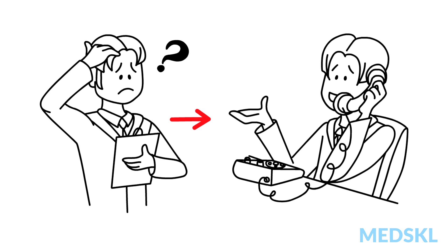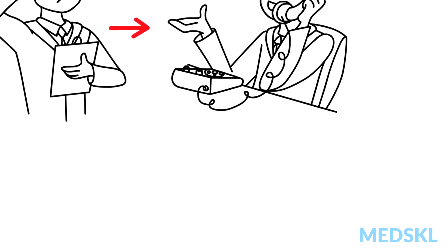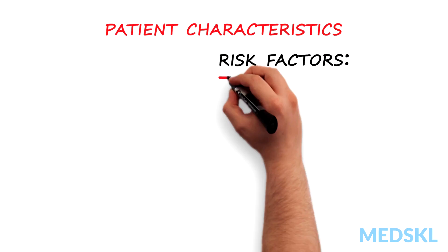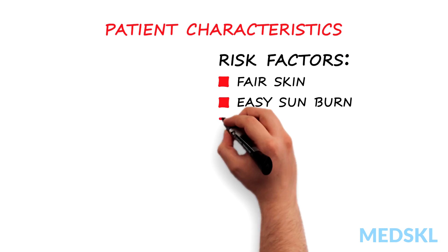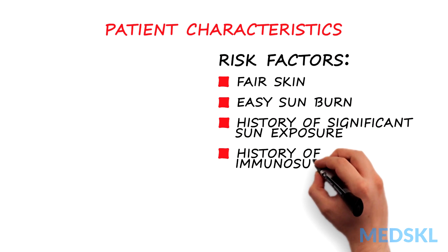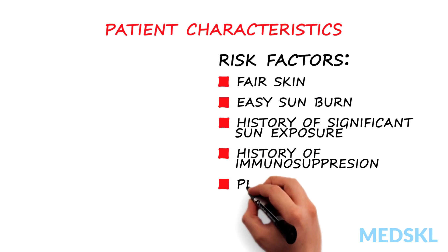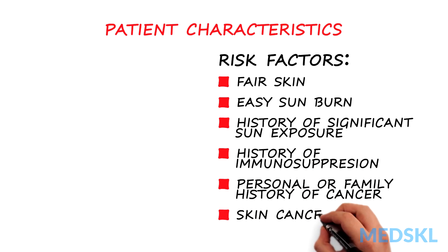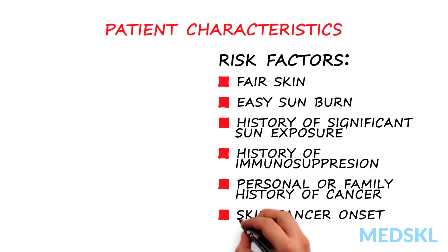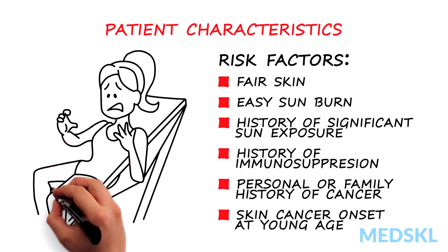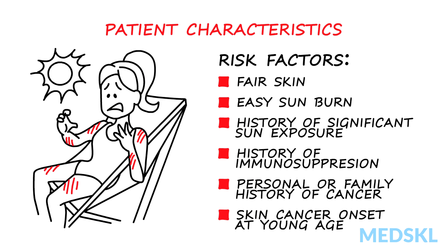Here are some things to consider in your evaluation of a patient. Patient characteristics such as fair skin, easy sun burning, history of significant sun exposure, history of immunosuppression, personal or family history of skin cancers or other malignancies, and skin cancer onset at a young age can identify subsets of patients at a higher risk for skin cancer.